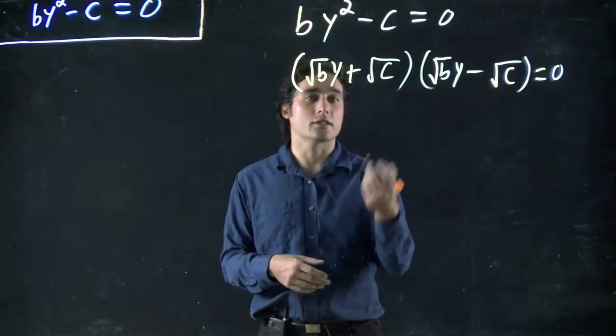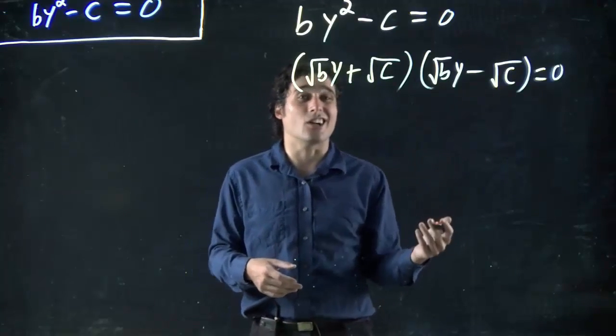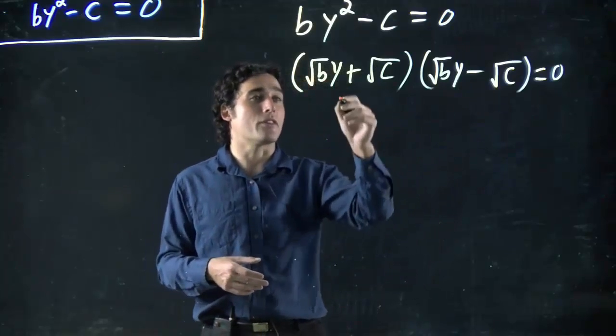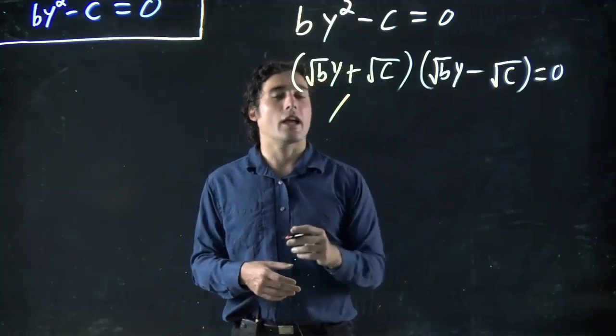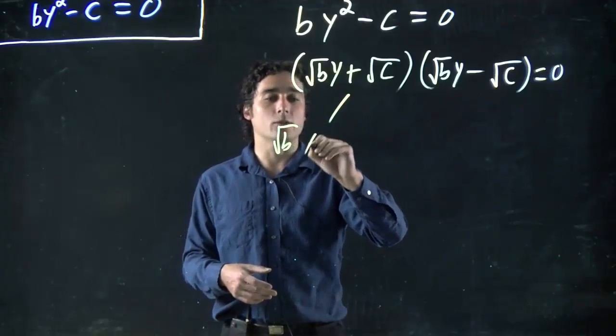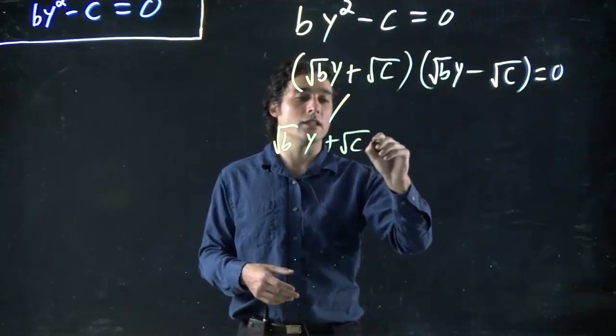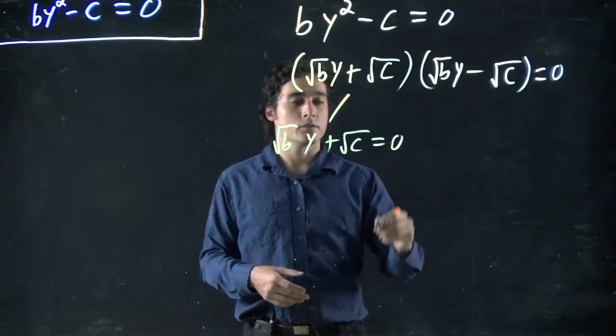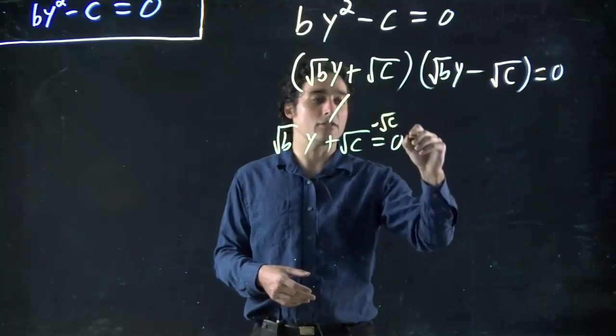If we want to, of course, we could solve this. So what? It's variables. We can still solve a general solution. Remember, this has to be equal to 0 and or this. So we get square root of b times y plus square root of c equals 0.